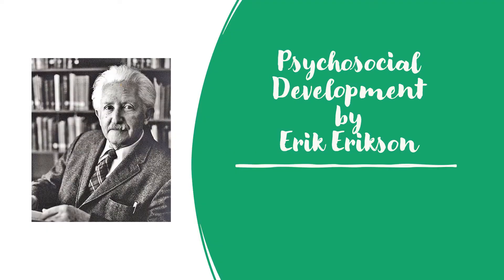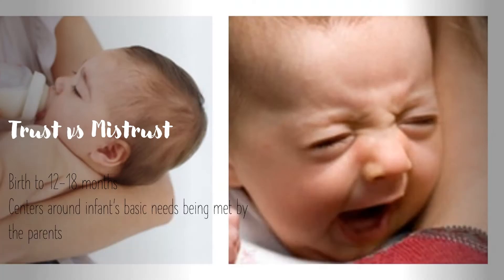Moving on to psychosocial development by Erik Erikson. There are eight stages. The first is trust versus mistrust, birth to 12 to 18 months. This stage centers around the infant's basic needs being met by the parent. When the parent responds to the child's crying — for example, by feeding — the child builds trust. If the parent does not respond, the child builds mistrust. Failure to develop trust results in fear, while developing trust gives the infant a sense of security.